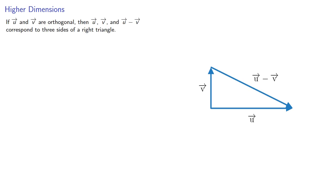So suppose vectors u and v are orthogonal. Then in any dimensions, we have two sides of a right triangle, where the third side is u - v. So if u and v are orthogonal, then u, v, and u - v correspond to the three sides of a right triangle.